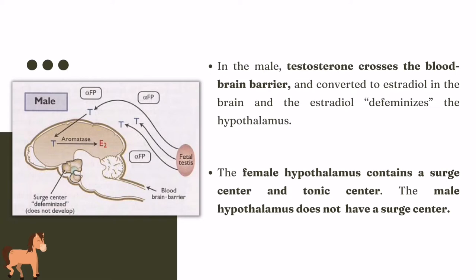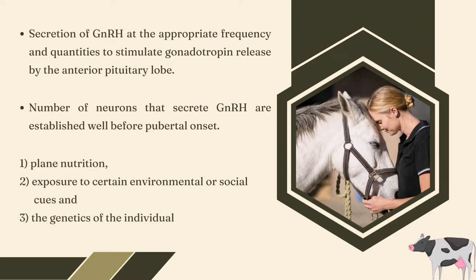The female hypothalamus contains a surge center and tonic center, while the male hypothalamus does not appear to have a surge center. The fundamental difference in the endocrine profiles of the post-pubertal male and female is that luteinizing hormone (LH) does not surge in the male but maintains a relatively consistent day-in and day-out episodic pattern of secretion. The requirement for pubertal onset is the secretion of gonadotropin-releasing hormone at the appropriate frequency and quantities to stimulate gonadotropin release by the anterior pituitary lobe. Gonadotropins will promote gametogenesis, steroidogenesis, and the development of reproductive tissues. The number of neurons that secrete gonadotropin-releasing hormone, their morphology and their distribution within the hypothalamus are established well before pubertal onset.